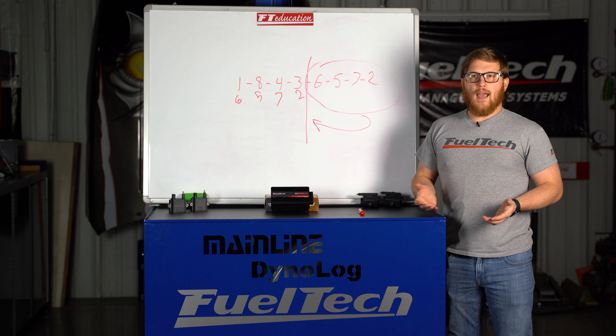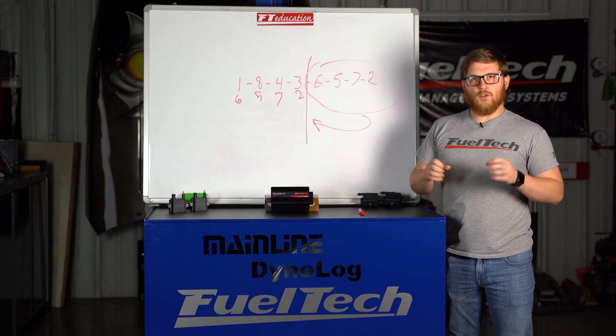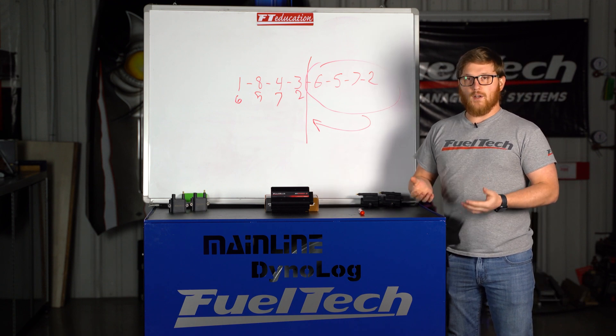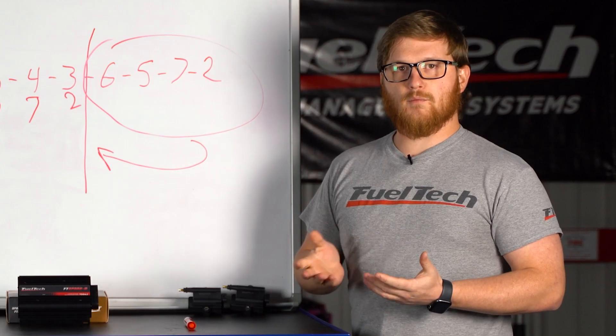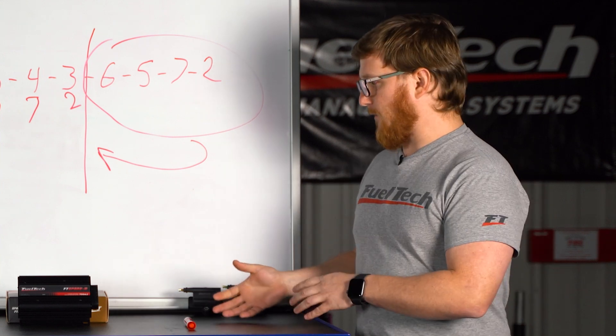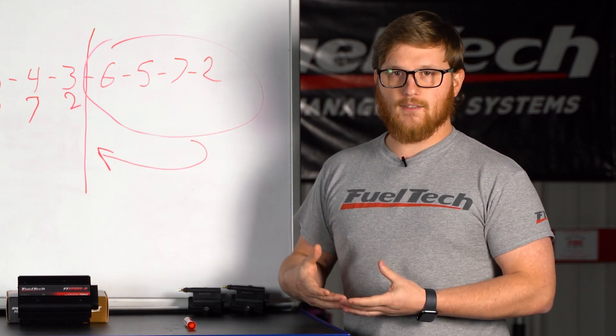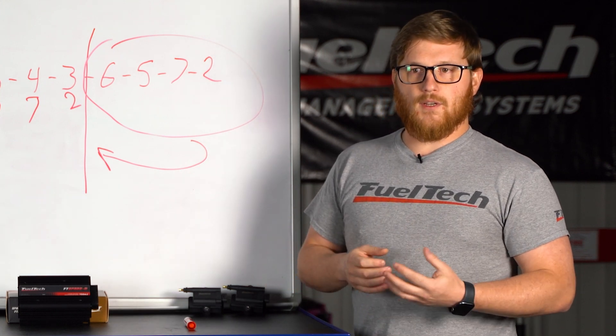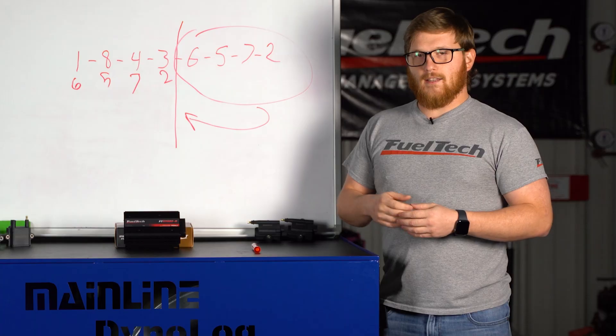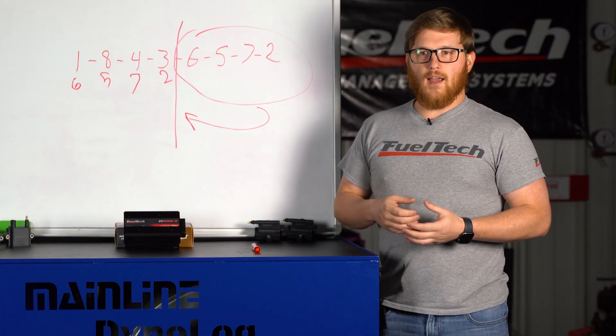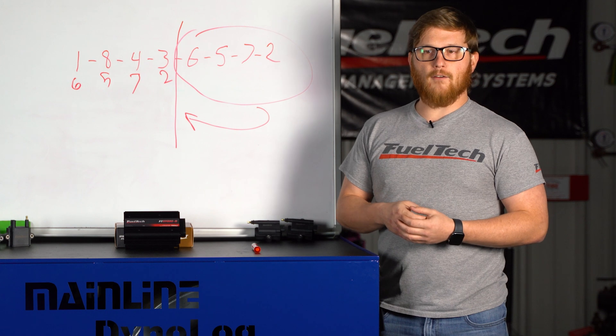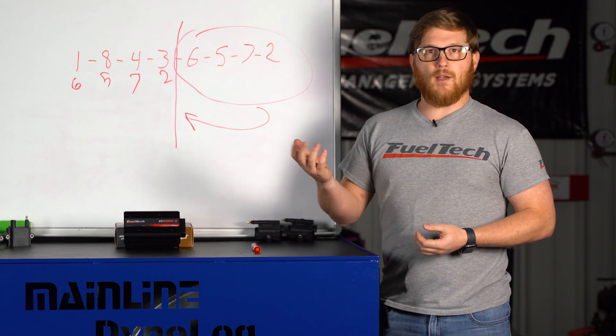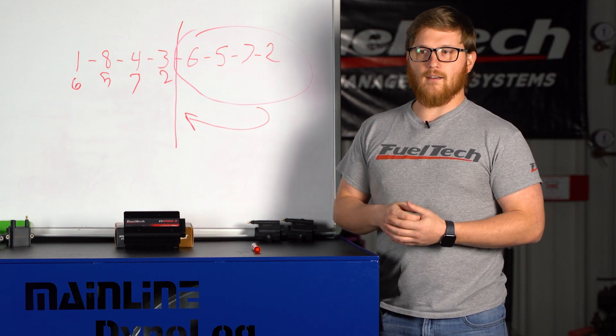Also, if you have a vehicle that has what we call dumb coils or coils that do not have a built-in igniter like these, you can do wasted spark or sequential ignition with one of our spark pro modules, which I don't have sitting in front of me, but it's basically a little box about this big that has an igniter circuit in it to excite that coil and get it to fire. That's another method of doing coil-on-plug on vehicles like some of the Ford vehicles have what we call dumb coils where they don't have a built-in igniter. Coyote Mustangs and that sort of vehicle come to mind right off the top of my head.